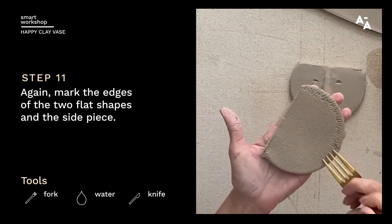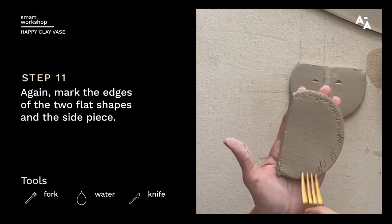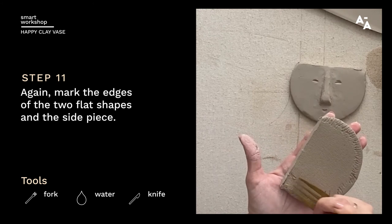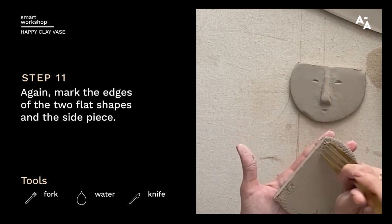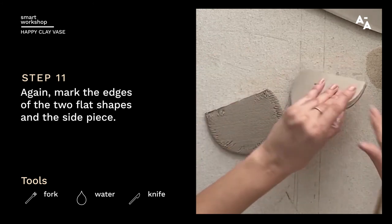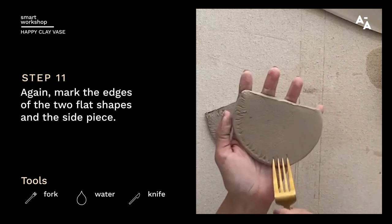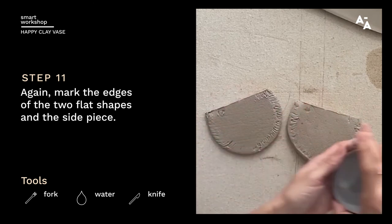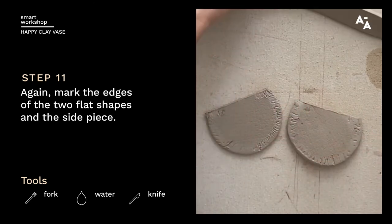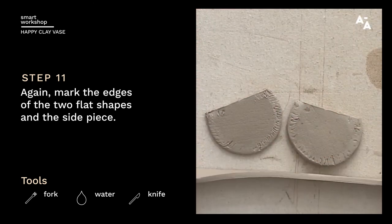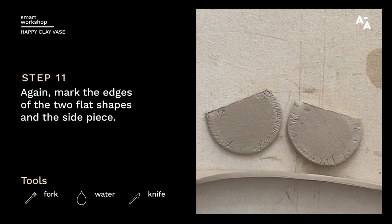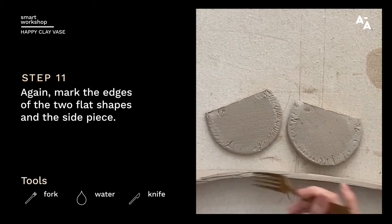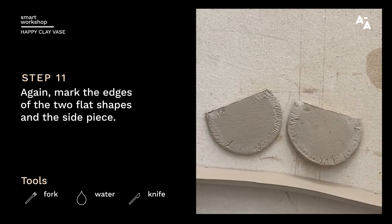So now I'm going to use a fork to just score the edges. And this will attach the pieces. And then I'm going to take the side of this straight piece and make a groove. And then another one, so that it will attach well.